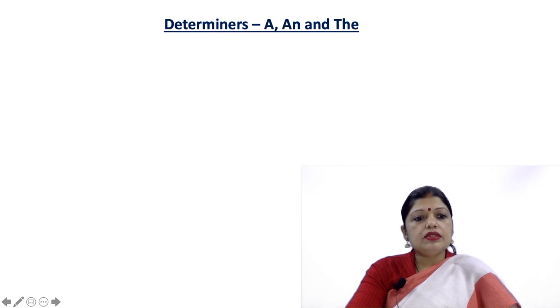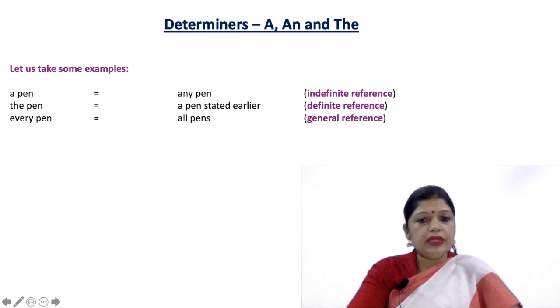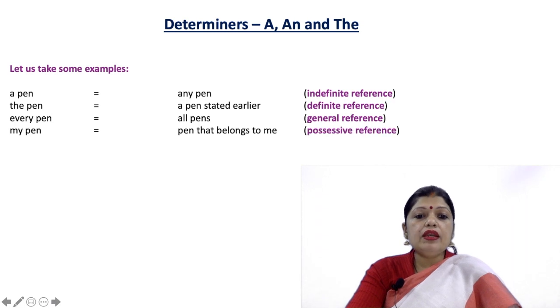Let us take some examples. A pen means any pen - this is indefinite reference. The pen: a pen stated earlier - definite reference. Every pen means all pens - general reference. My pen: pen that belongs to me - possessive reference.